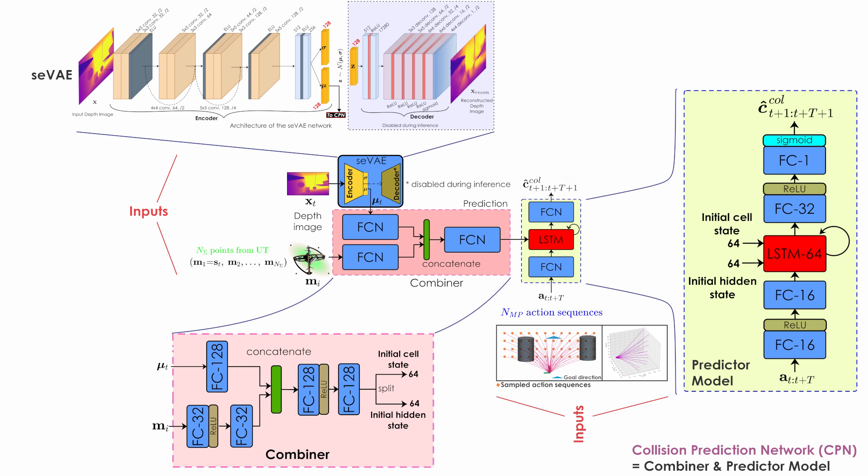To train the combiner and prediction networks, random action sequences are rolled out in simulation and collision labels for every time step are recorded where zero labels correspond to non-colliding states and one labels correspond to colliding states. The prediction network containing an LSTM with 64 hidden and cell states is used to predict collision status.